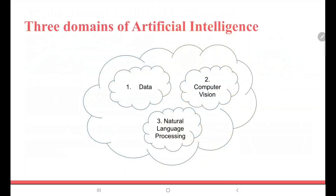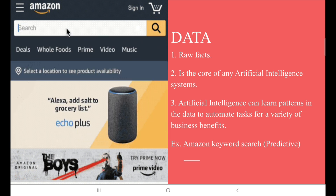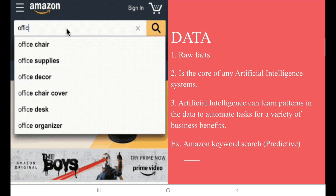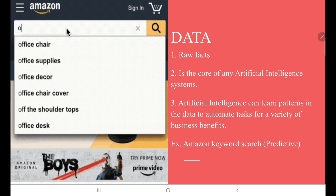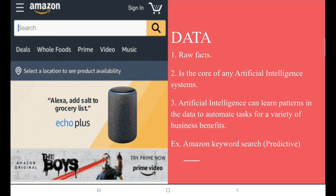Now we will talk about the three domains of Artificial Intelligence. The first domain is Data, the second is Computer Vision, and the third is Natural Language Processing. Data is the raw facts and is the core of any artificial intelligence system. AI can learn patterns in the data to automate tasks for a variety of business benefits. An example shown in the figure is Amazon keyword search, which is predictive.